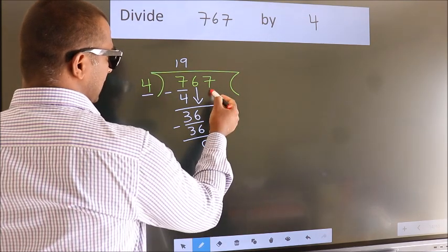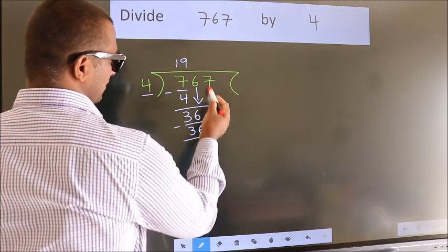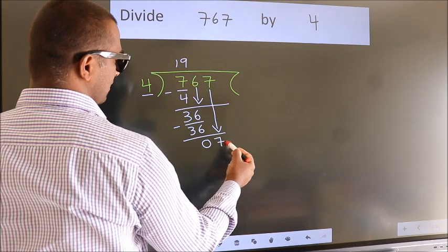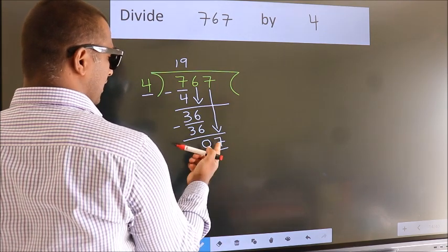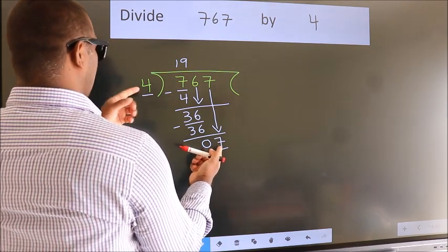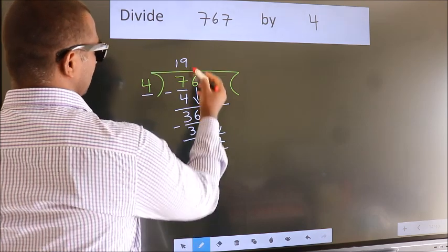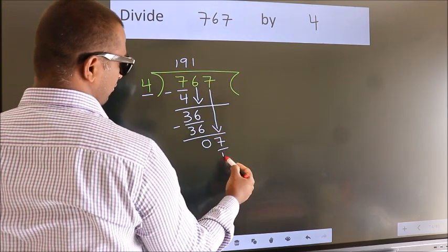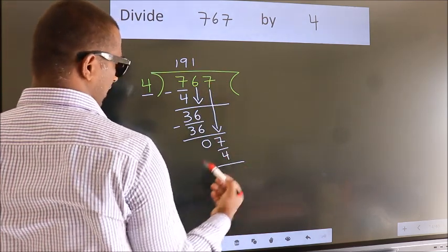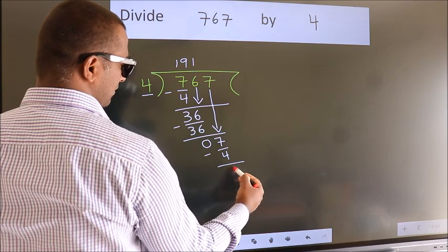After this, bring down the beside number. So 7 down, giving us 7. A number close to 7 in the 4 table is 4 once 4. Now we subtract. We get 3.